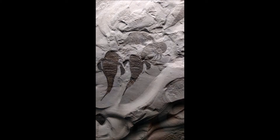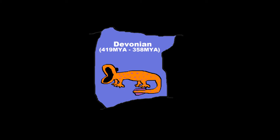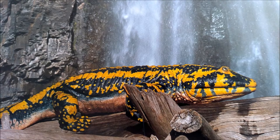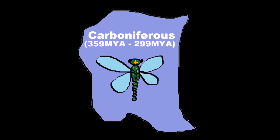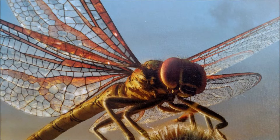That brings us to our next period, the Devonian. This marks the first appearance of the first land animals — amphibians and lungfish were king during this time. Next period to come is the Carboniferous. This is when oxygen levels were super high — the highest in Earth's known history, in fact. So bugs got really, really big, and we had 10-foot-long centipedes crawling around.